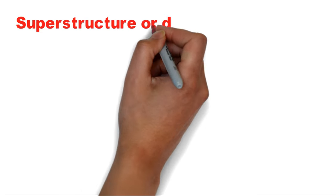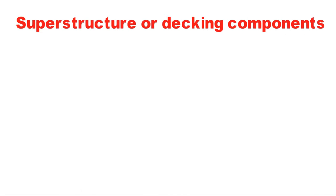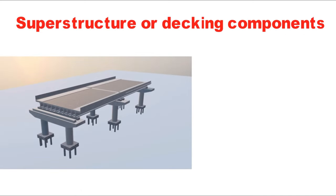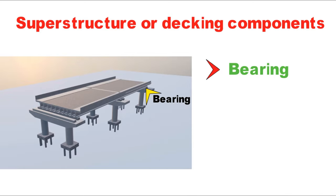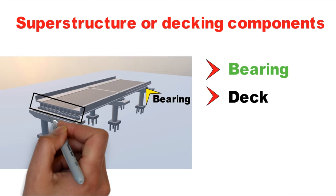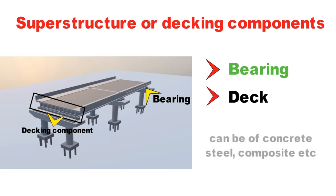Now coming to superstructure or decking components. Superstructure components consist of a bearing and the deck components. The decking components can be of concrete, steel, or sometimes a combination of concrete and steel — these are called composite members.